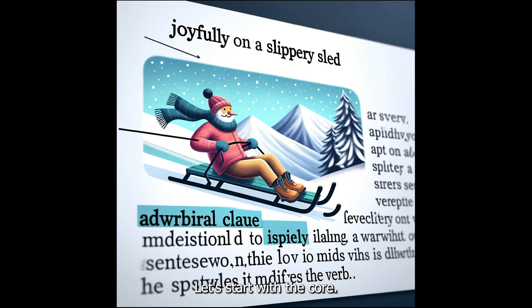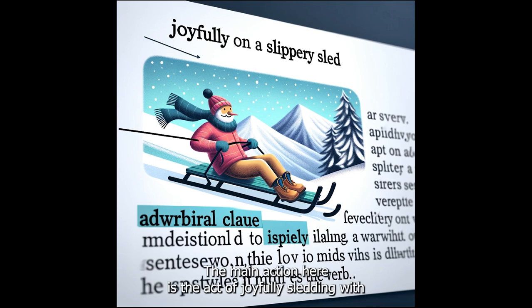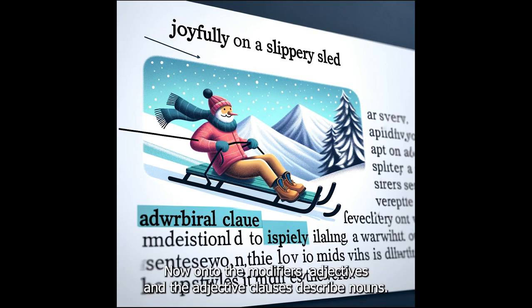Let's start with the core — the subject and the verb. The main action here is the act of joyfully sledding, with 'the act' as the subject and 'is enjoyable' as the verb. Now onto the modifiers.